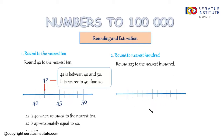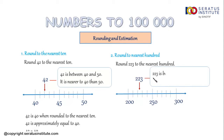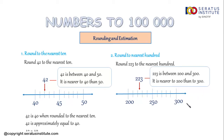Here is the number line — 223 is between 200 and 300. Now 223 is here. So we can say that 223 is between 200 and 300. It is nearer to 200 than to 300.